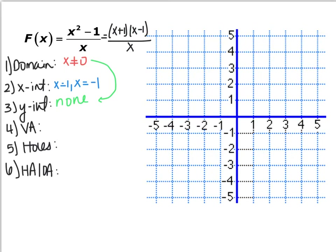Now for vertical asymptotes and holes: the only thing that makes the denominator 0 is x equals 0, and it only makes the denominator 0 — not the numerator — so we don't have any holes. It has to make both equal to 0 to be a hole. So our vertical asymptote is x equals 0. Whatever is listed in domain restrictions must be listed in vertical asymptotes or holes, but only listed once.